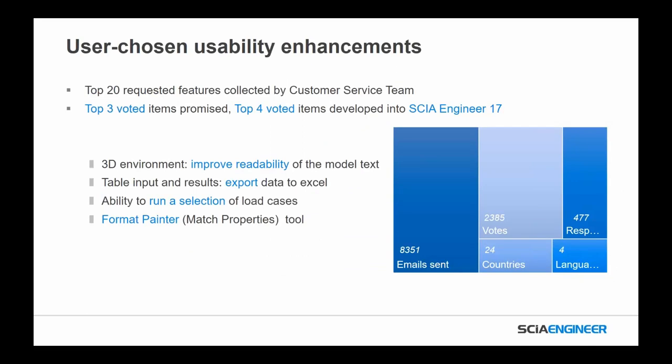One of the biggest things we did during development for the version 17 release was a survey for user-chosen usability improvements. We took the top 20 requested features collected by the support and customer service teams and allowed people with an active maintenance agreement to vote on those items. We promised to develop the top three — we actually ended up doing the top four. From that we ended up developing: improved readability for text, a direct single-click export from table input and table results into Excel, the ability to run a single load case or selection of load cases rather than everything, and a format painter tool — also known as a match properties tool in AutoCAD.